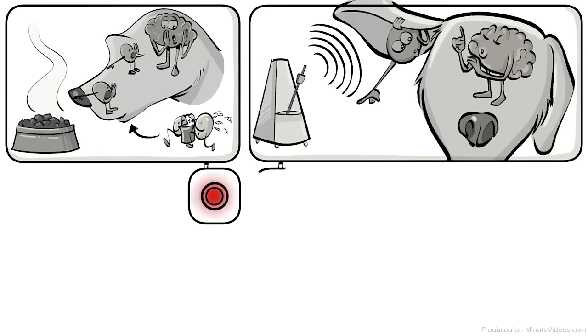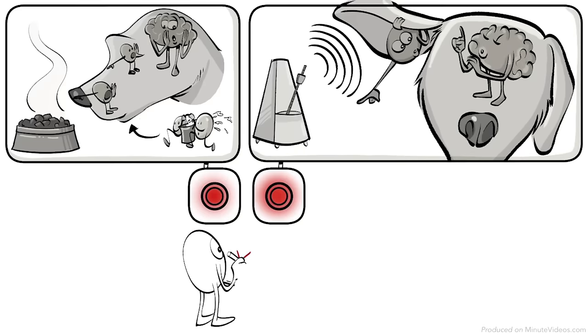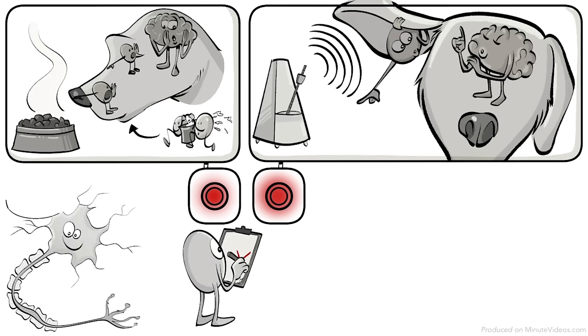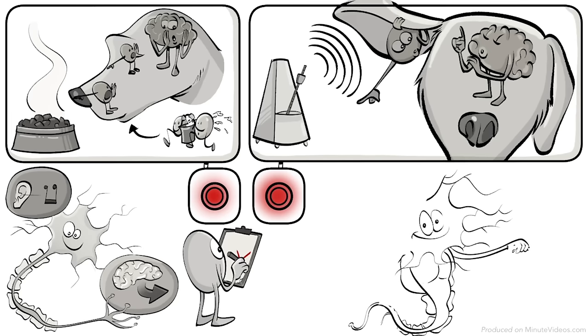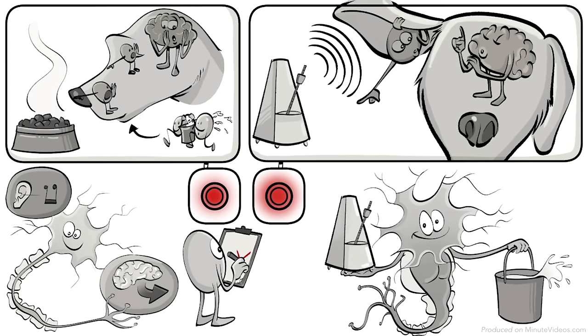When the two different neurological processes are being activated simultaneously, new synaptic connections occur between the auditory stimulus and the behavioral response. Over time, these synapses are strengthened so that it only takes the sound to activate the pathway leading to salivation.